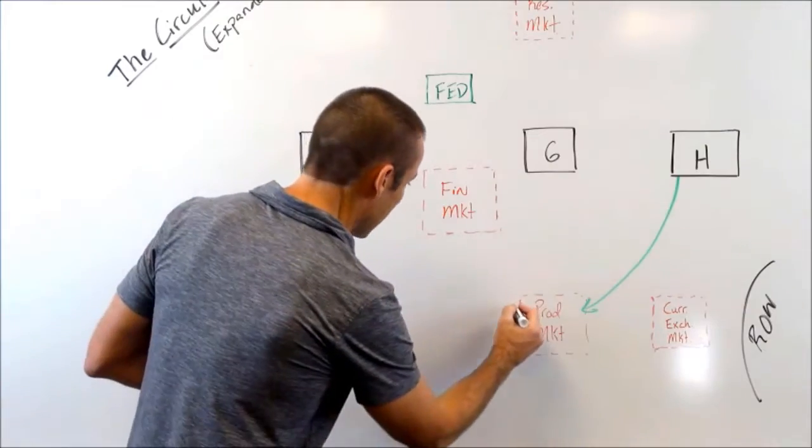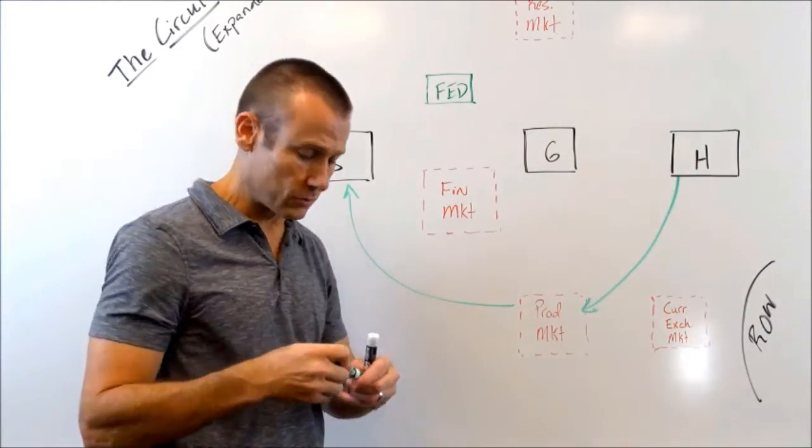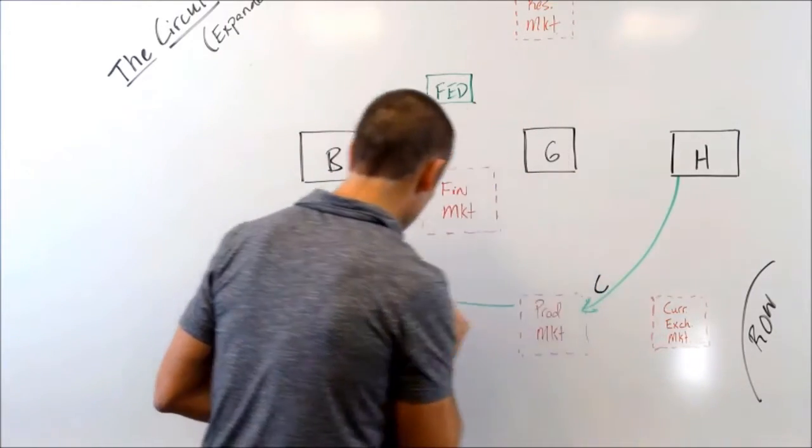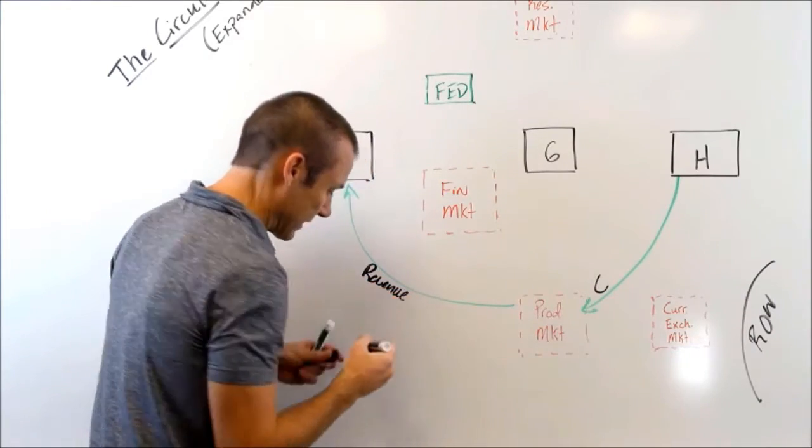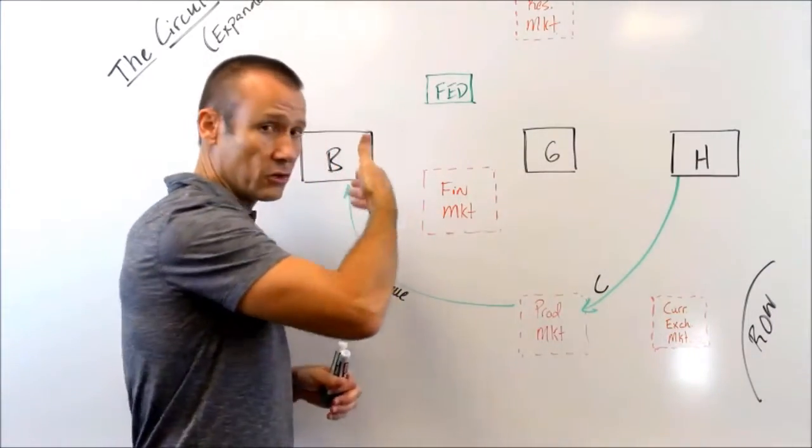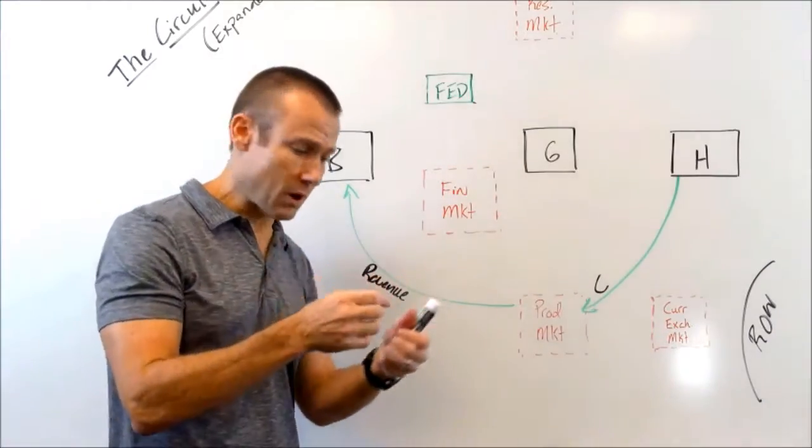That money flows through the product market and heads over to businesses as revenue. So let's go ahead and get these labeled. This is consumption. This is revenue. I'm not always going to write it out completely. Let's put a C there for consumption. This is the beginning of our circle. Now, that revenue, well, revenue breaks down to cost and profit.